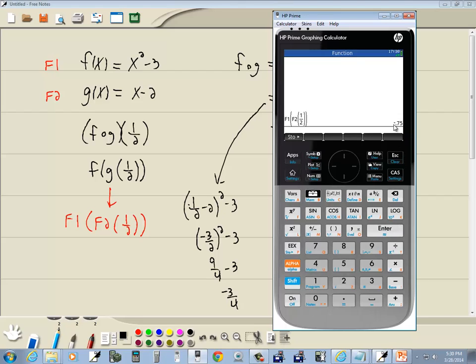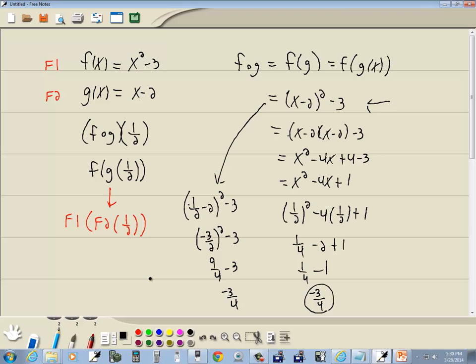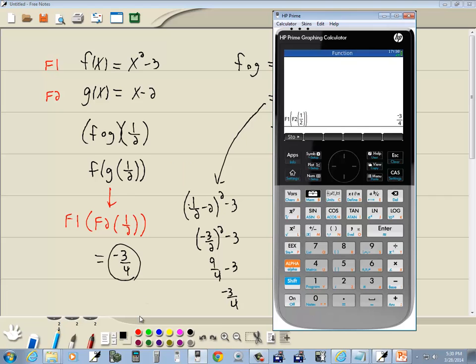Now, again, to change anything, it's in decimal form or fraction on this calculator, you press your fraction button. It's A and then B over C. When I do that, I get negative 3 fourths. If you had a mixed number form, remember, you can keep pressing this over and over. You're going to alternate back and forth between the different forms. This is just negative 3 fourths. That's how you evaluate composite functions on an HP Prime graphing calculator.